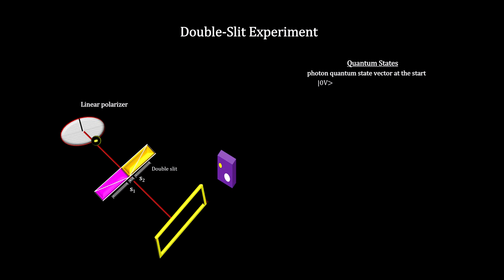Plate 1 in front of slit 1 will change the photon's polarization to be clockwise, while plate 2 in front of slit 2 will change it to be counterclockwise. These are reflected in the photon's new quantum state where R is for clockwise and L is for counterclockwise.